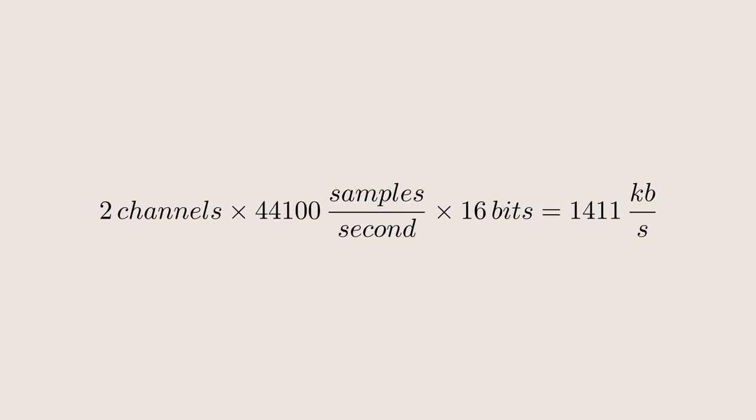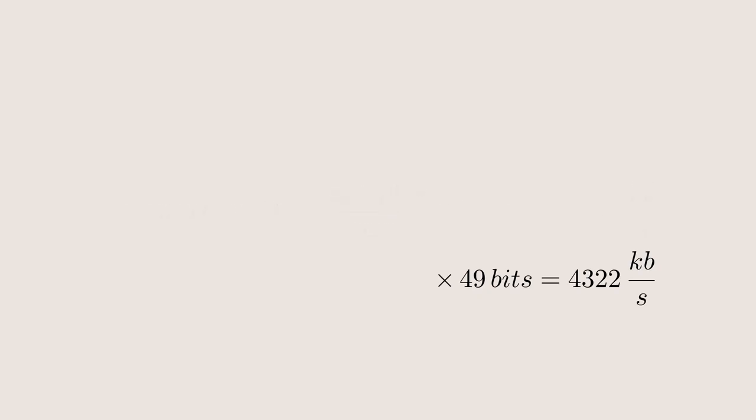1,411 kbps is rather fast, and this just includes the pure data. In reality, to send 16 information bits over any network, more bits are needed for things like error correcting and framing. The CD protocol in particular requires 49 total bits per word to account for its error-correcting codes and digital modulation. This brings the data rate up to 4,322 kbps, which would be enough to swamp a slow internet connection if you are watching a YouTube video with just the audio alone. But you are clearly able to watch fantastic videos like this one all over the internet, so how is that possible?